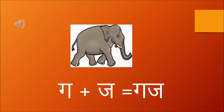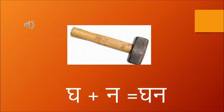Then it's ga aur ja. Ga se gamla wala ga, aur ja say jhaaj wala ja. Together ga and ja make gaj. Gaj means an elephant. Gha — ghar wala gha. Anna nal wala na. Together gha and na becomes ghan. Ghan means a hammer.